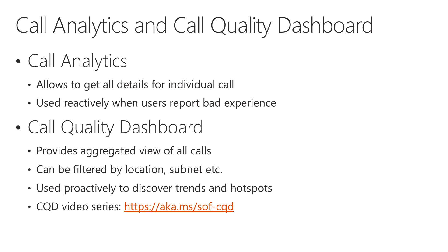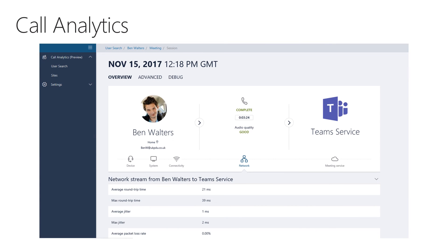In order to learn all the details on how to use CQD, I recommend watching the CQD video series that you can find at aka.ms/SOF-CQD. This screenshot shows what Call Analytics looks like. Here you can see a meeting that Ben Walters joined and that the quality was considered as good. You can see information like round trip time, jitter, packet loss and so on, and you can drill down to get much more information. If Ben Walters had told me this was a bad call, I could use this report to find out what could have caused the bad experience.